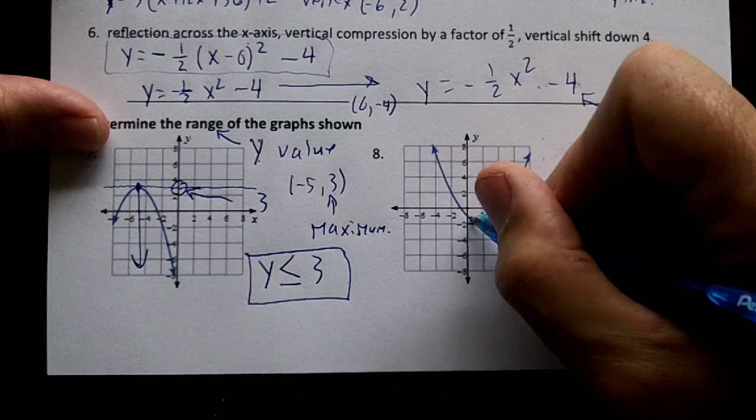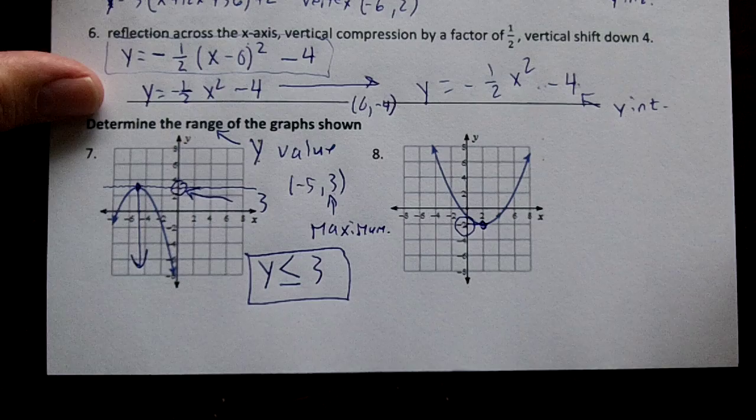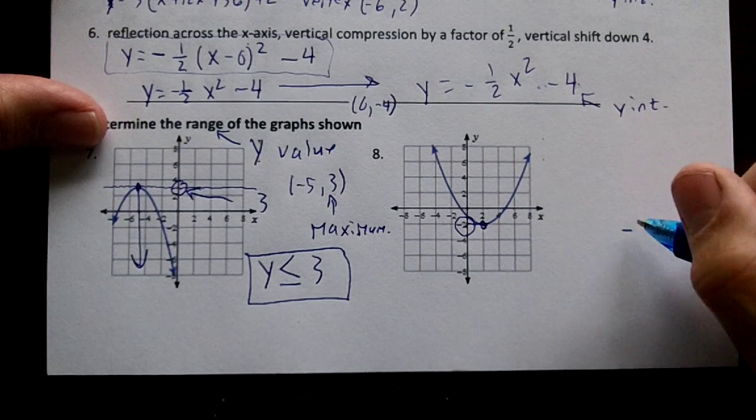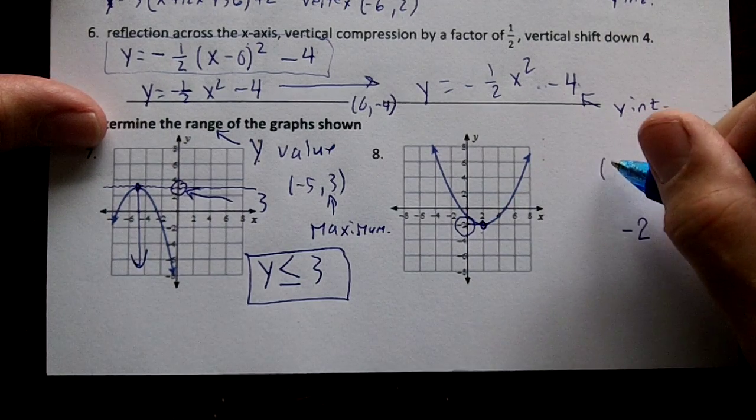Here's our vertex right here. Go across, and it's at negative two, right? So at negative two, our vertex would be two comma negative two, wouldn't it?